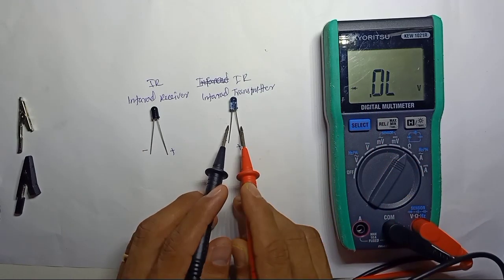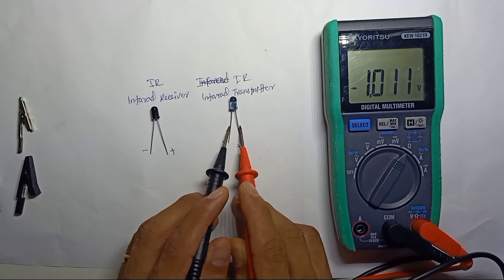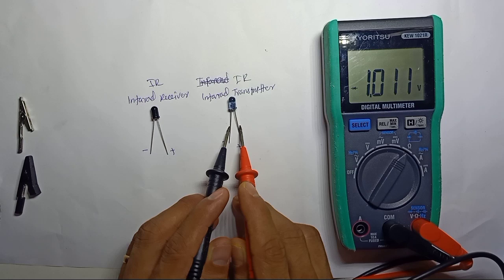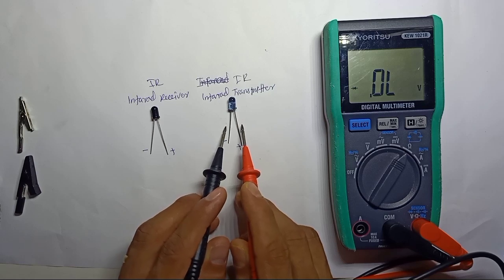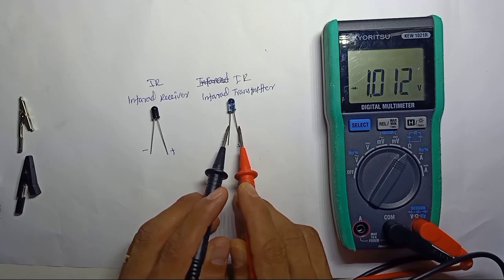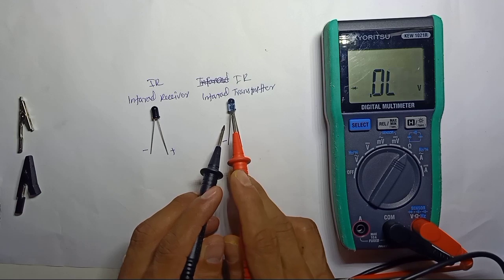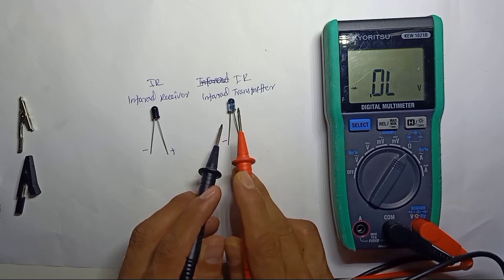In forward mode, negative to negative, we get a 1.011 voltage drop. This is the diode voltage drop. If you test like this, you will not see any light come out - we cannot see light from here because this is not an LED, this is an infrared transmitter.